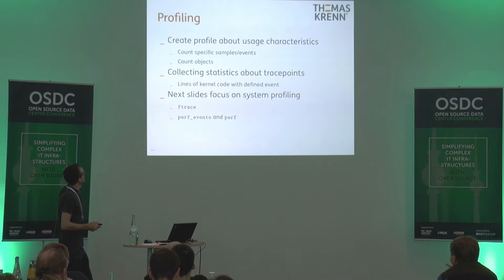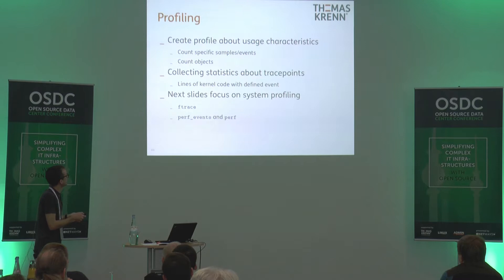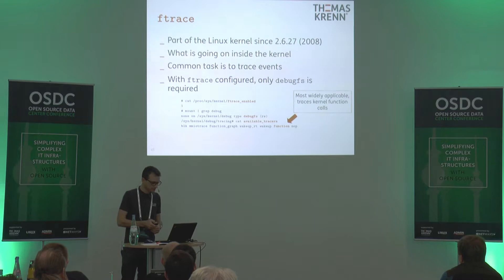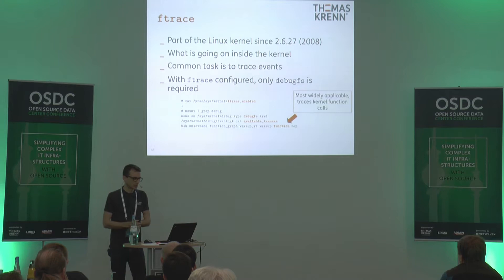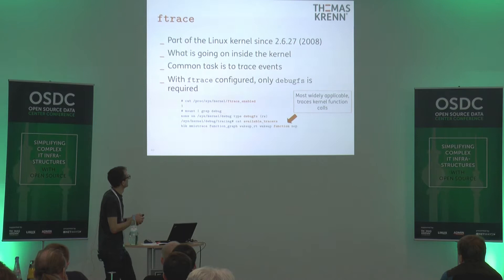What's tracing and profiling about? With the tracing and profiling tools you can count specific samples or events, count objects, and collect statistics for what happens within the kernel code. The next slides focus on system profiling using FTrace, perf events, and perf. FTrace has been in the Linux kernel for about nine years. It's good for seeing what is going on inside the kernel, and a common task is to trace events — you need debugfs mounted for it to run.